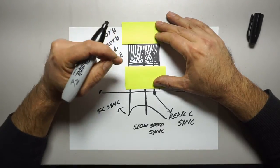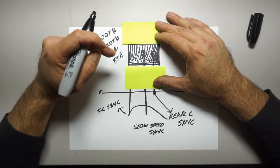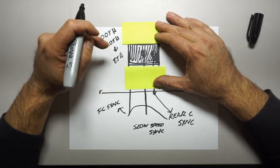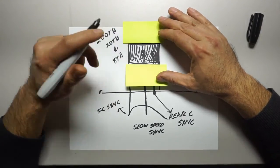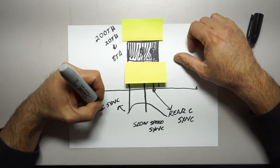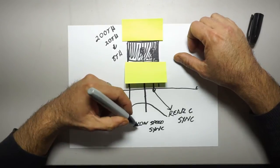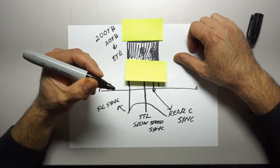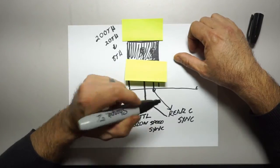And then there's high speed sync. And we just covered that or we'll cover that in another video. So there you go. There's your front curtain, slow speed sync, also known nowadays as TTL, and rear curtain sync.